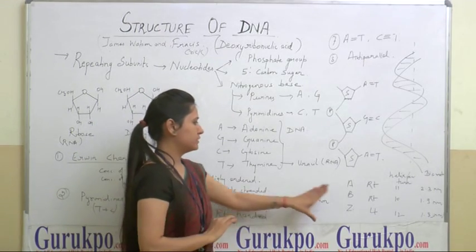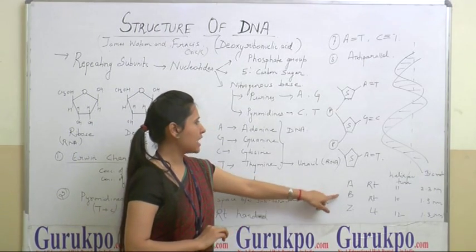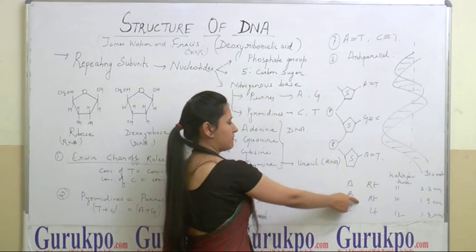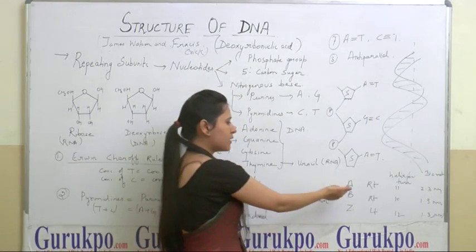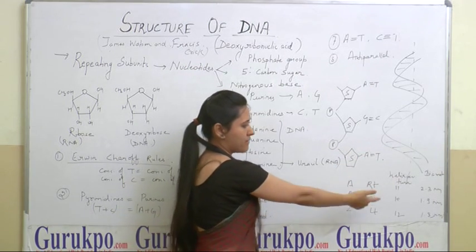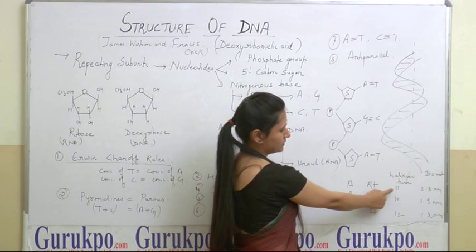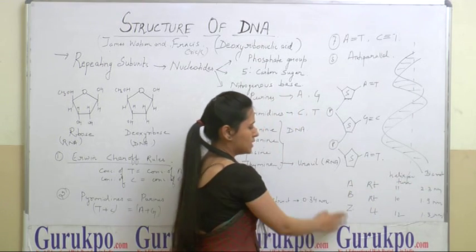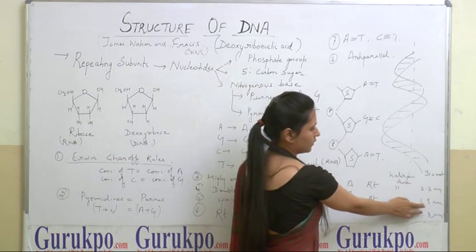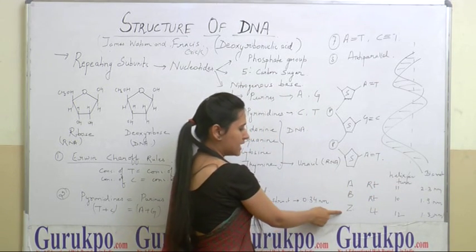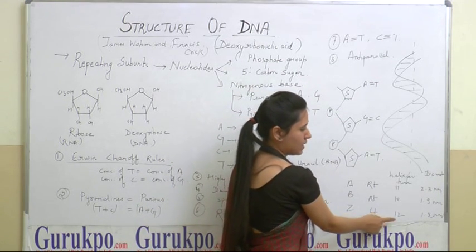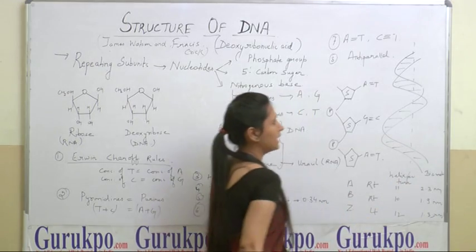Talking about the types of DNA, there are mainly three types. Usually organisms have B-type, which is more prominent. A-type is also right-handed like B, having a helix pitch of 11 and a diameter of 2.3 nanometres. B is right-handed with a helix pitch of 10 and a diameter of 1.9 nanometres. Z-type is zigzagged in structure, it is left-handed, with a helix pitch of 12 and a diameter of 1.8 nanometres.